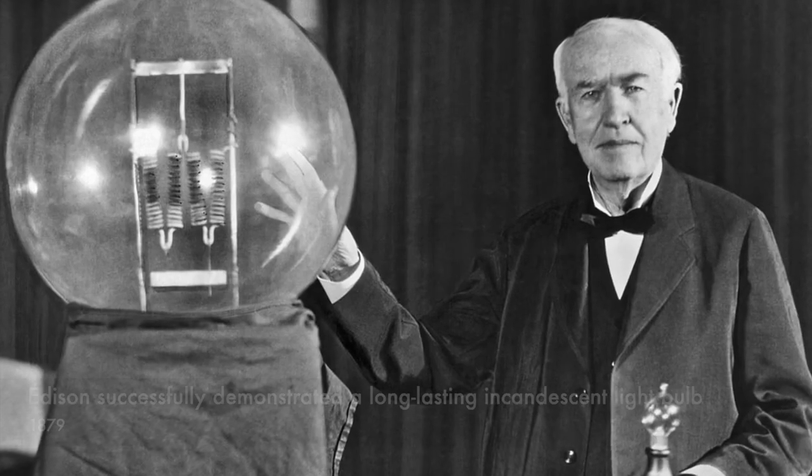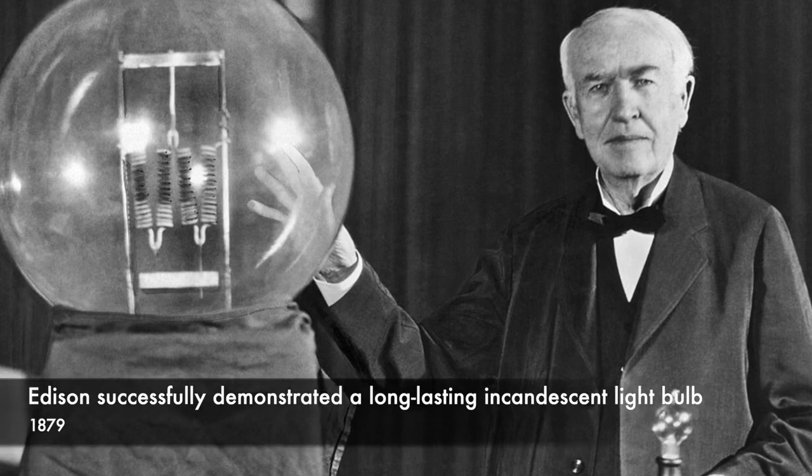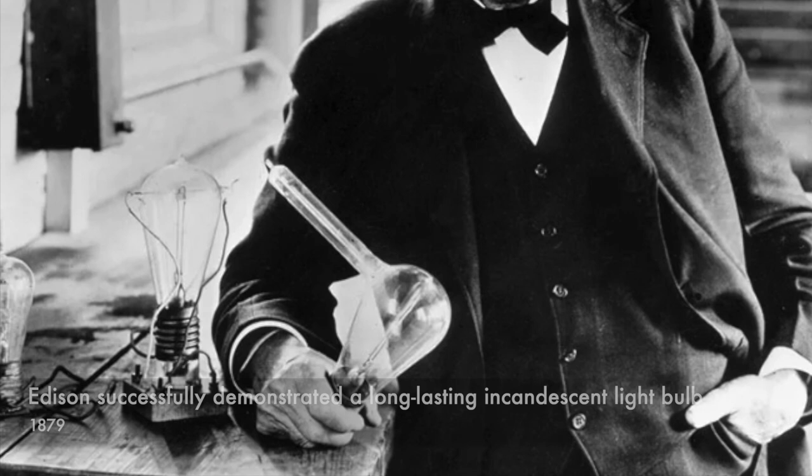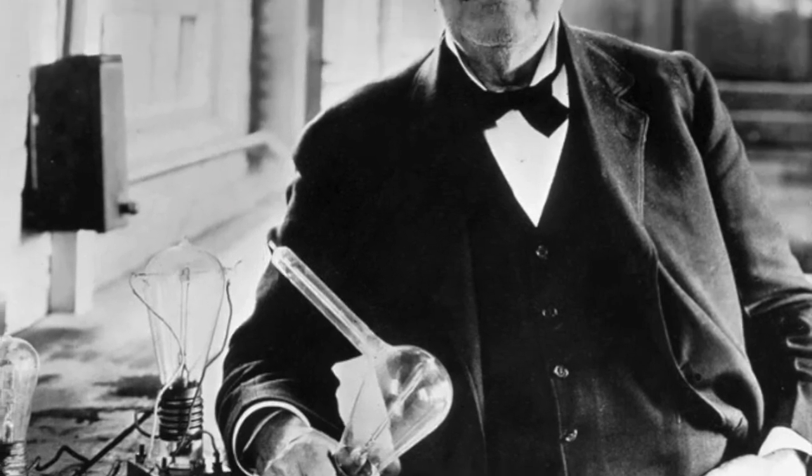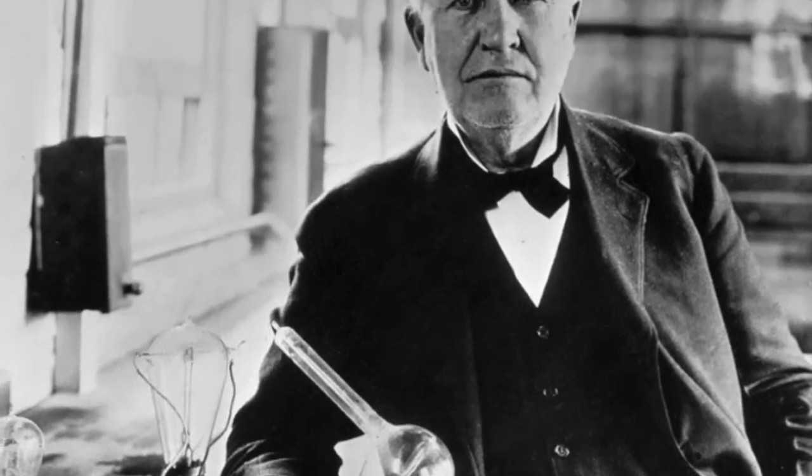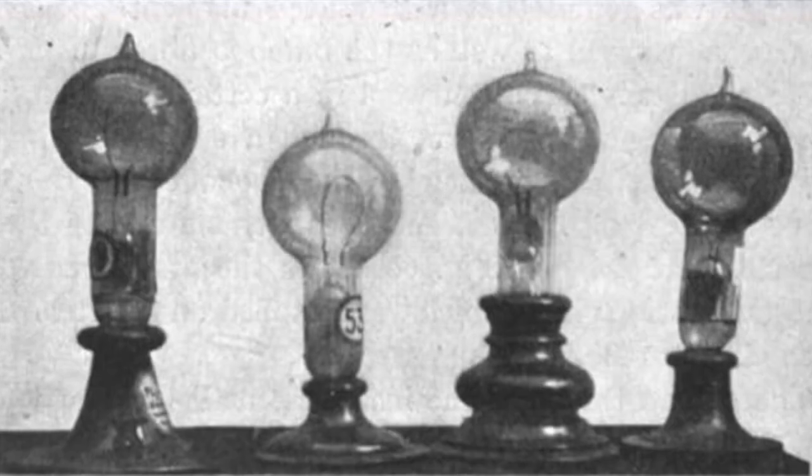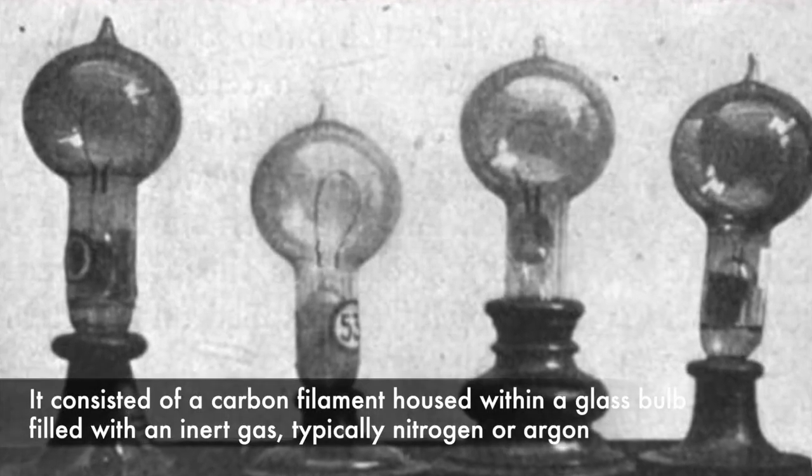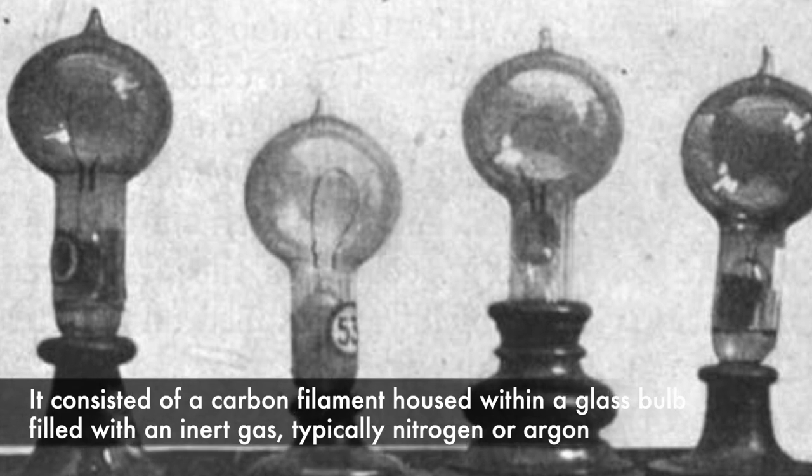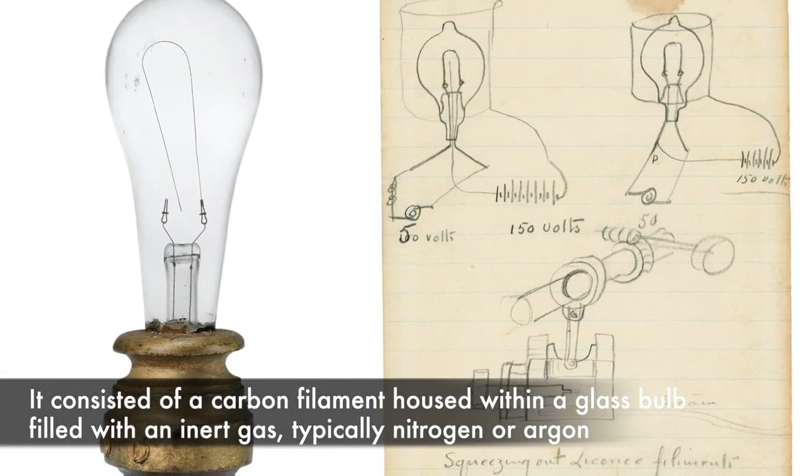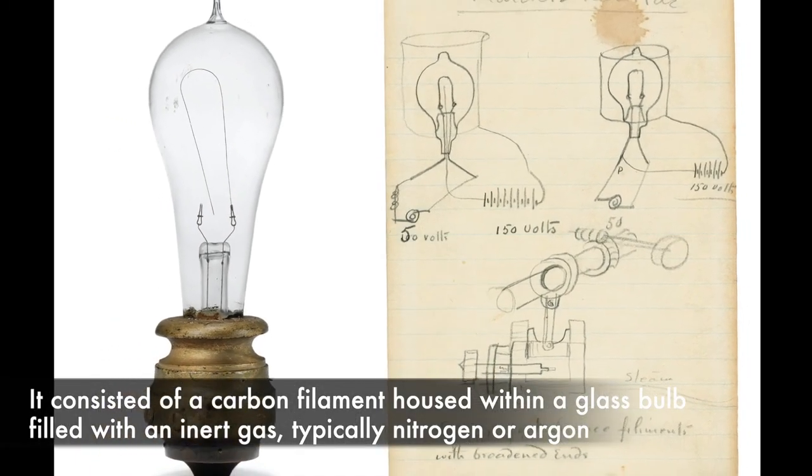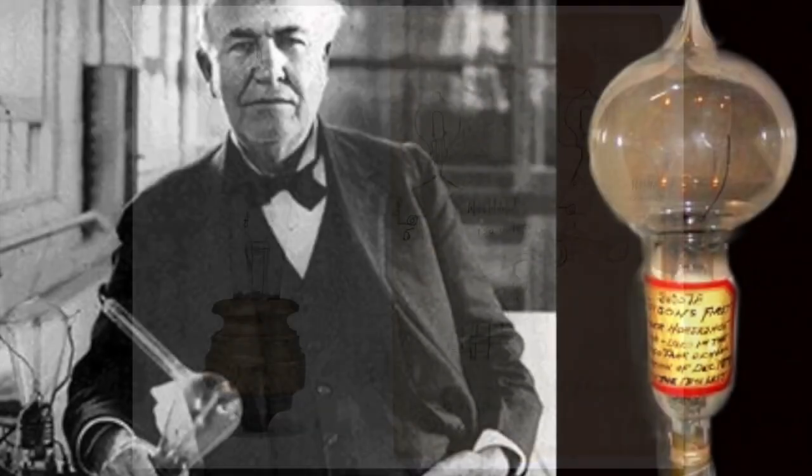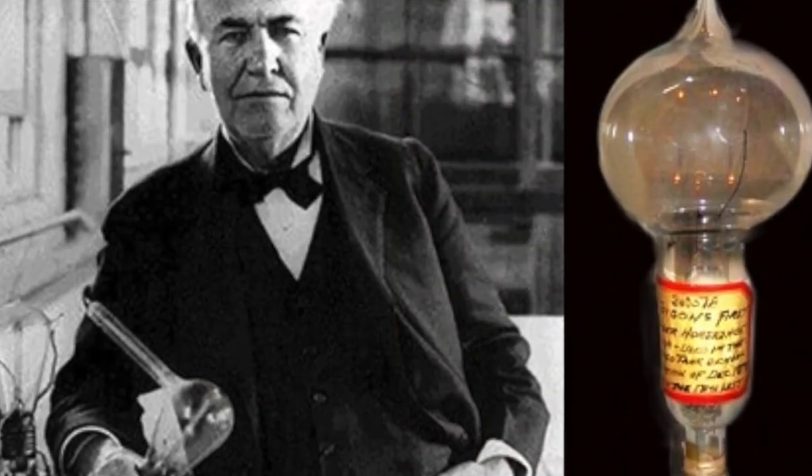Edison's breakthrough came in 1879 when he successfully demonstrated a long-lasting incandescent lightbulb. Unlike previous designs, which burned out quickly or produced weak illumination, Edison's bulb was a game-changer. It consisted of a carbon filament housed within a glass bulb filled with an inert gas, typically nitrogen or argon. When an electric current passed through the filament, it heated up and emitted light without burning out immediately.